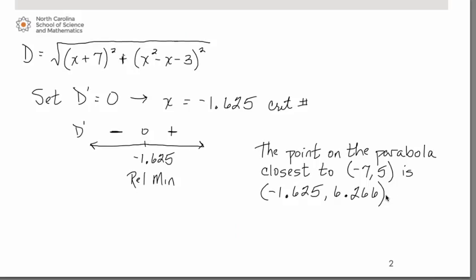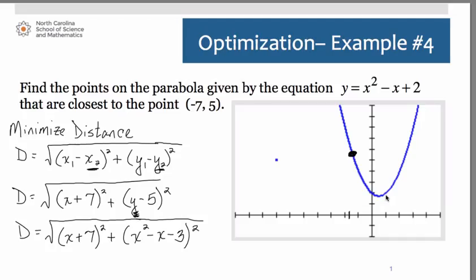We find that the point on the parabola closest to the point negative 7 comma 5 would be the point negative 1.625 comma 6.266. If you look at the graph, that makes sense because we were trying to minimize the distance to the parabola from this point out here.